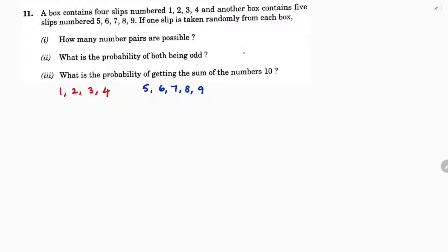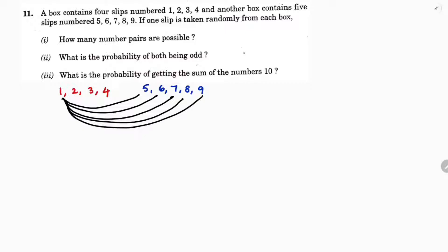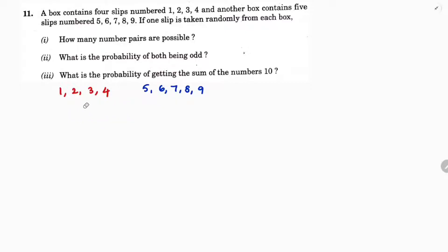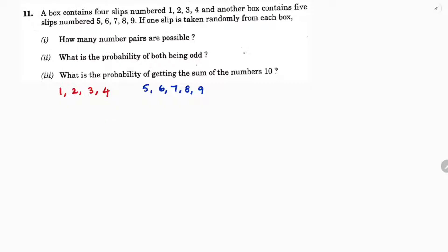Now they're asking how many number pairs are possible. You need to pair like this: one with five, one with six, one with seven, one with eight, one with nine — then again with two, like two with five, two with six, two with seven. In this way we need to write all the possible pairs.